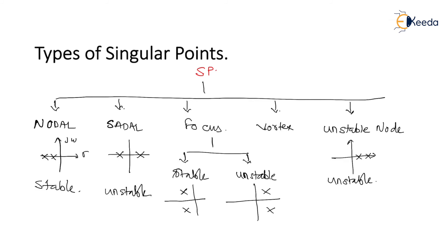The last part is the concept of vortex point, which is completely pure complex pole locations with no real part. Vortex point is completely based on complex pole locations with zero real part. So if I draw the pole locations for vortex point, the poles will always lie on the imaginary axis — they won't lie on the real part or be in the form of complex conjugate with some real part. Such a system is said to be a marginally or critically stable system.